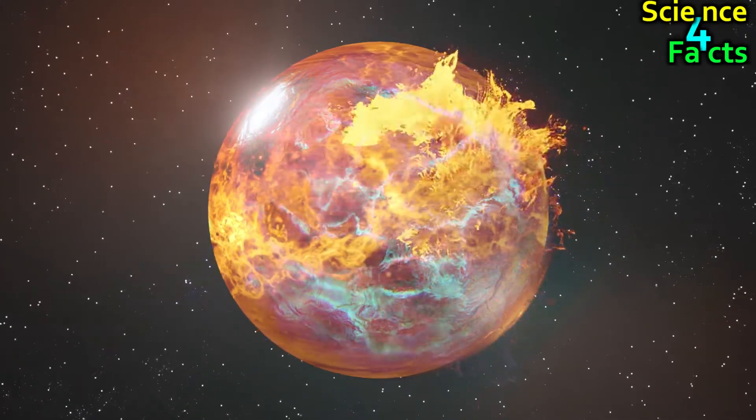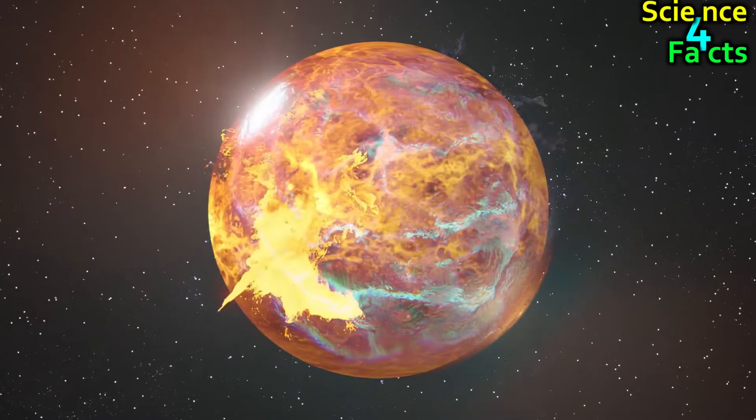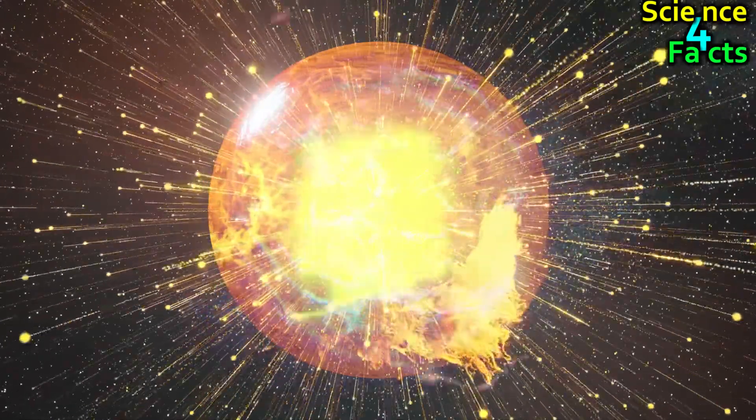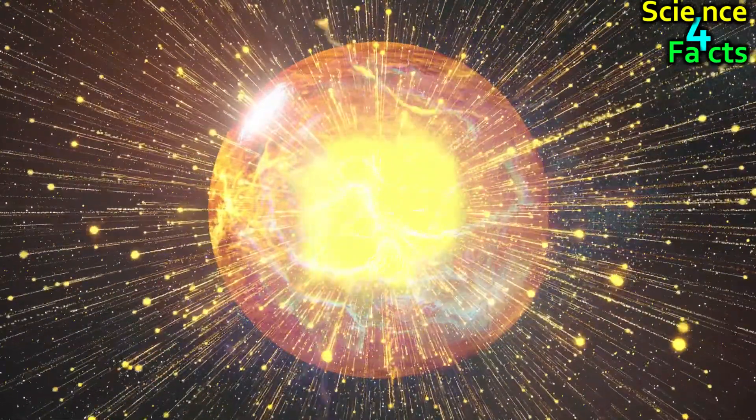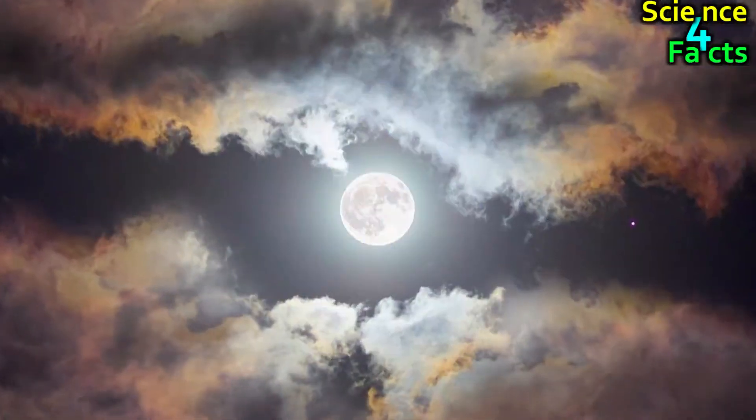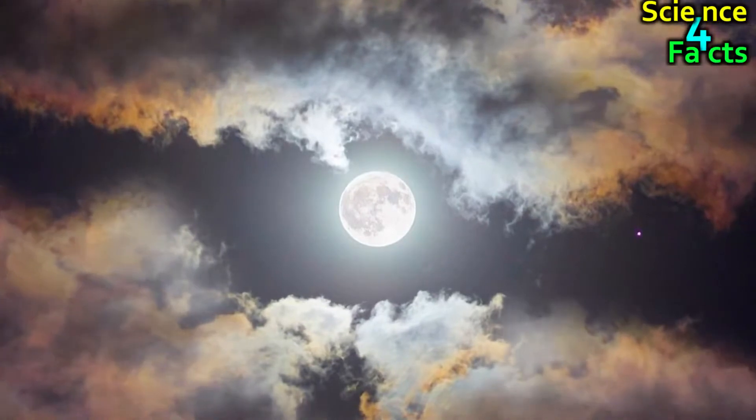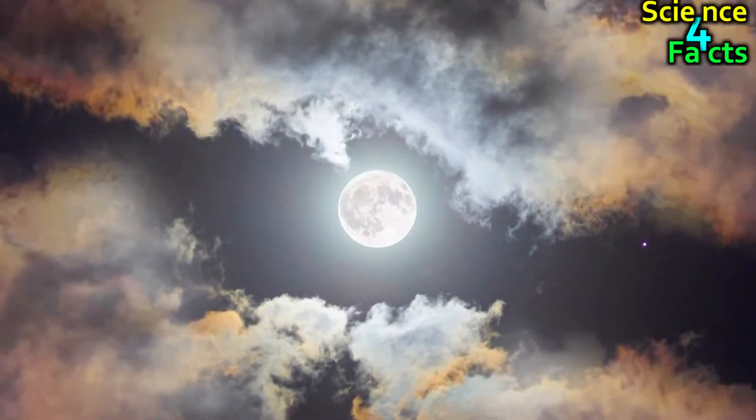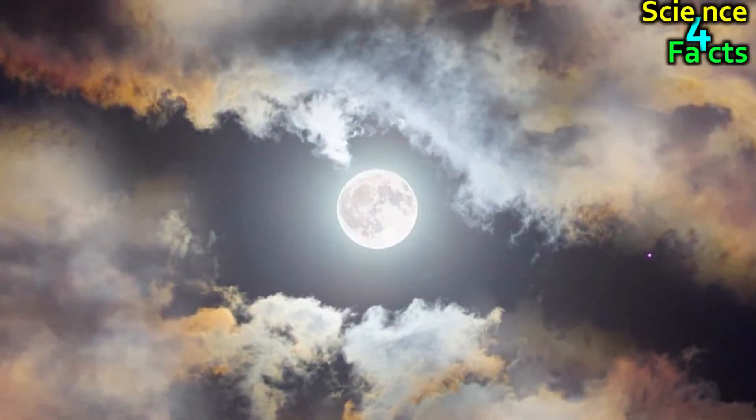Venus has the highest albedo of any planet in the solar system. It has close to 0.7 albedo, which means that it reflects about 70% of the sunlight that strikes it. Even the moon, which is nearer to Earth and could appear brighter at times than Venus, only reflects 10% of the light that hits it.